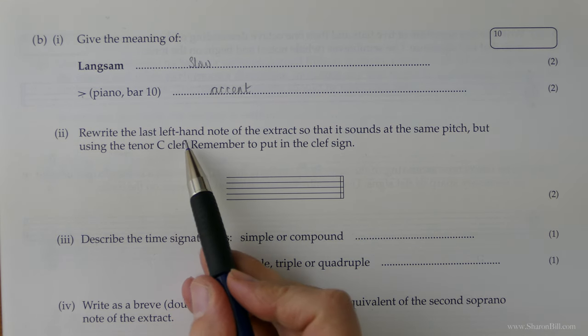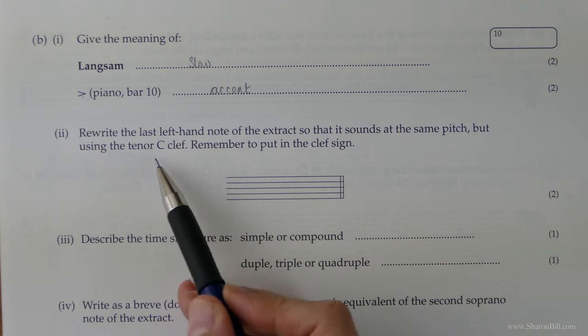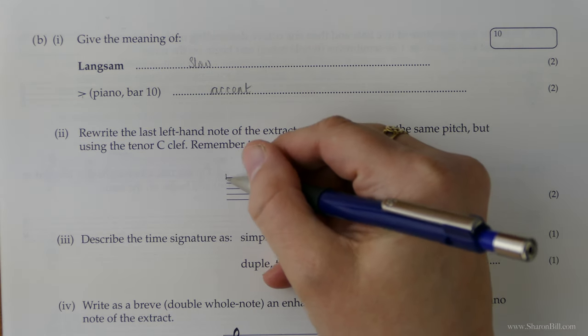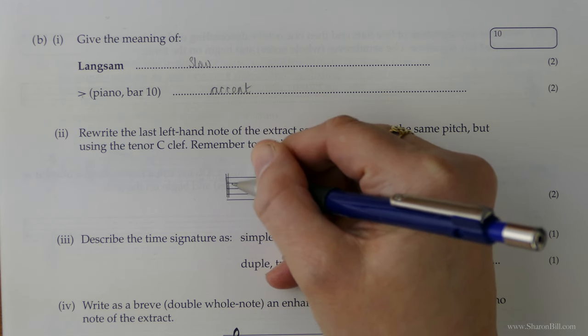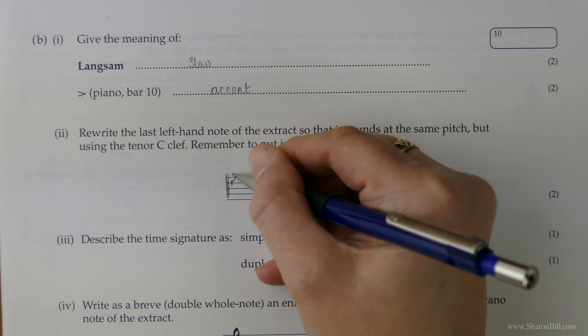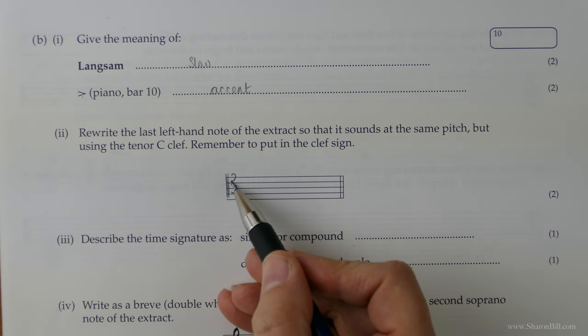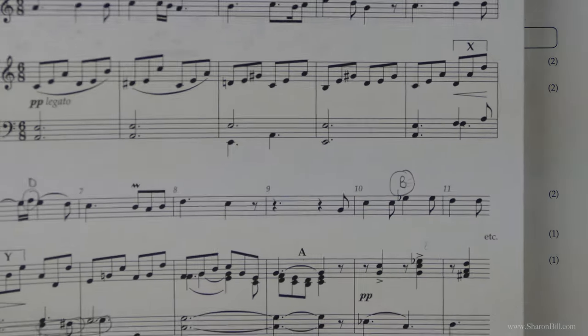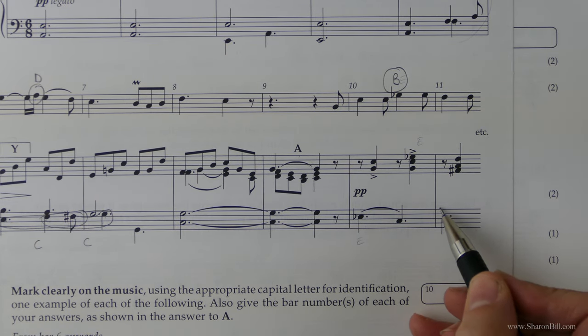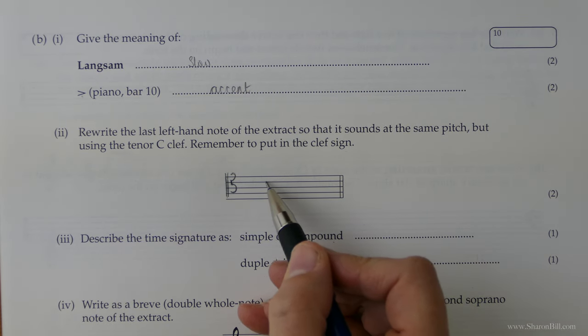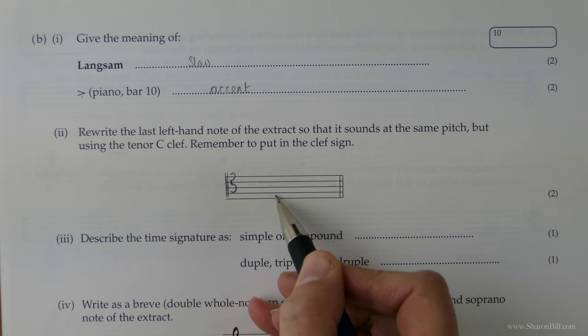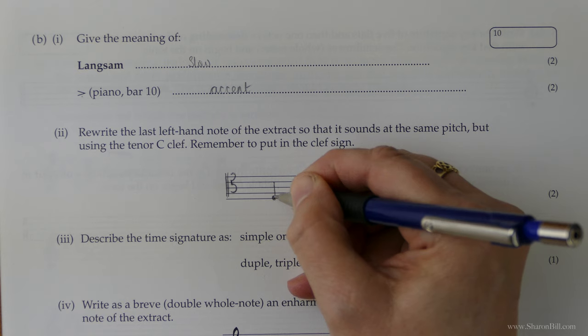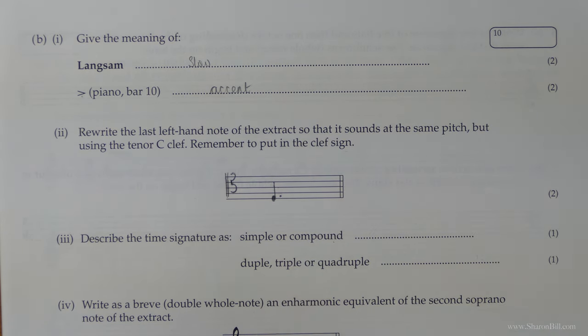Now then we're asked to rewrite the last left-hand note of the extract. We need it to be exactly the same pitch, but we're changing to tenor clef. So tenor clef is slightly higher up because this second from the top line is our middle C. And that's our reference point to make sure we don't end up an octave out. Keep middle C as your anchor point. So now let's look at the left-hand note. The last left-hand note of the extract is this D. Now this is the D below middle C. One, two, three, four, five, six, seven down from middle C. So here is middle C. C, B, A, G, F, E, D is this one here.